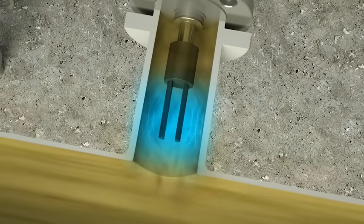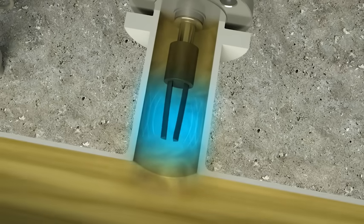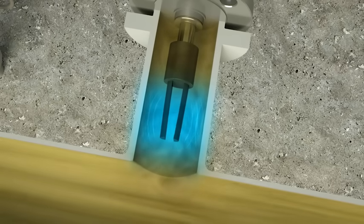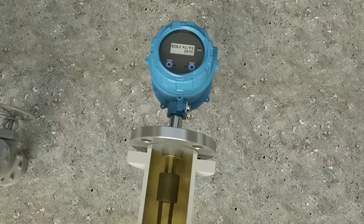During factory calibration, the meter is surrounded with an equivalent boundary to replicate the ultimate installation boundary. This ensures the most accurate density measurement.